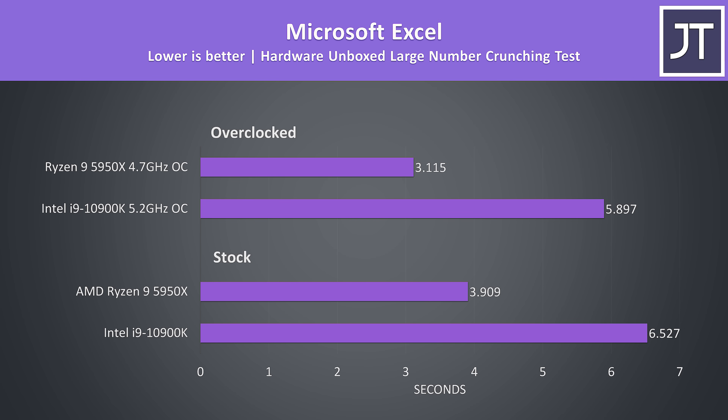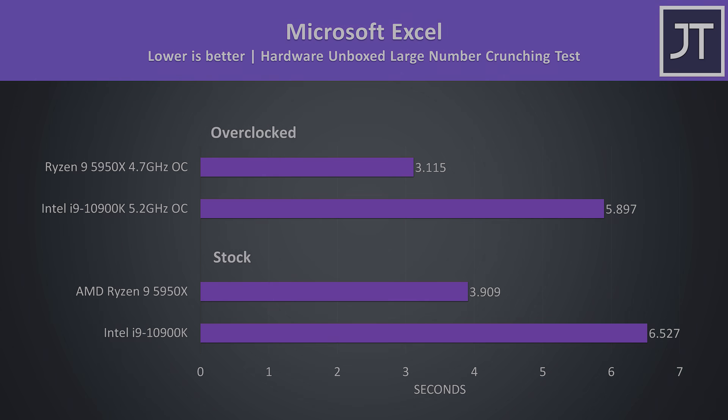Microsoft Excel was tested with the Hardware Unboxed large number crunch test, and this is one which generally receives benefits from Ryzen's larger cache size. The 5950X was 67% faster at stock, and then 89% faster with both overclocked, so Zen 3 could be the way to go if you need an epic spreadsheet machine.